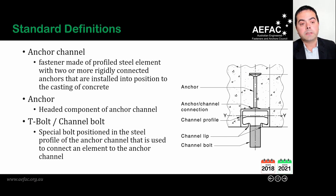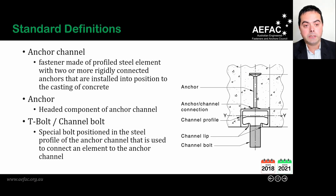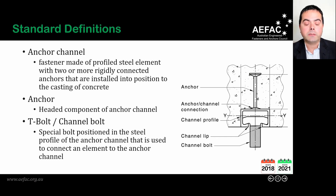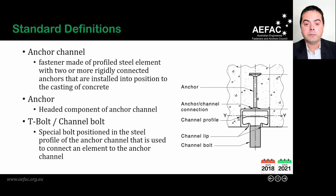Anchor channel is defined as a fastener made of a profiled steel element with at least two anchors rigidly connected to the channel profile. The anchor is the headed component connected to the channel profile. Note that AS 5216 uses the term 'fastener' for post-installed mechanical or chemical fasteners — such as expansion fasteners or bonded fasteners — while 'anchor' is used only to denote the headed component of an anchor channel. An additional component is the channel bolt, sometimes called a T-bolt, which is T-shaped and specifically designed for the channel profile to connect the fixture or connecting element to the anchor channel.